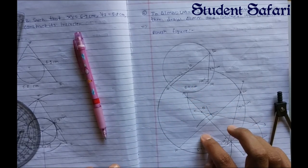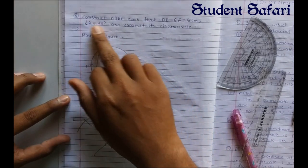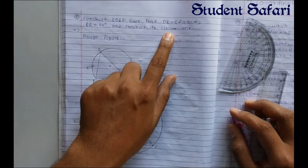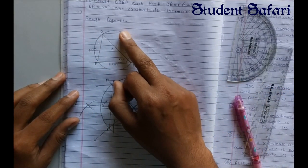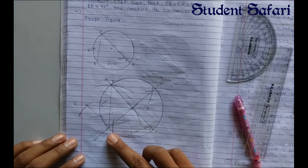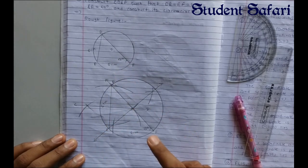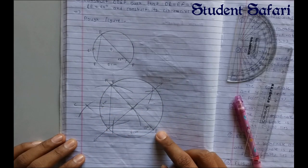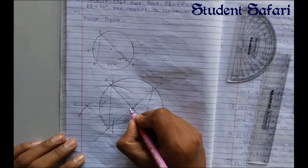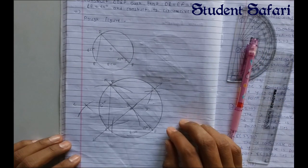Remember to draw the rough figure and fair figure apart from each other so they don't overlap. The next question: construct triangle DEF such that DF equals 6 centimeters, angle F is equal to 45 degrees, and construct its circumcircle. Draw the rough figure showing the circumcircle of triangle DEF, then draw segment EF as 6 centimeters, draw angle F equal to 45 degrees, bisect any two segments to get center O, and draw the circumcircle.